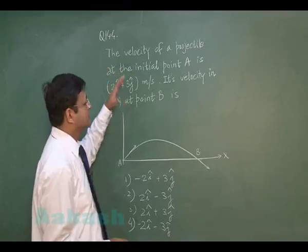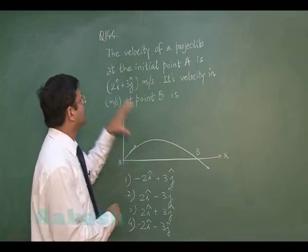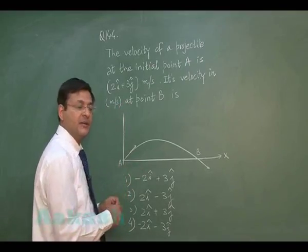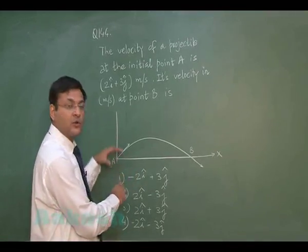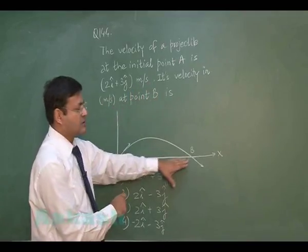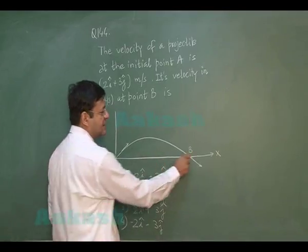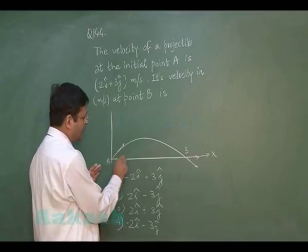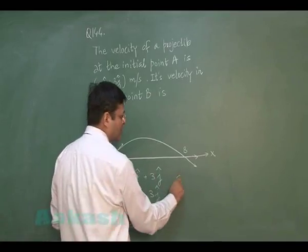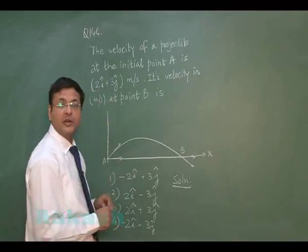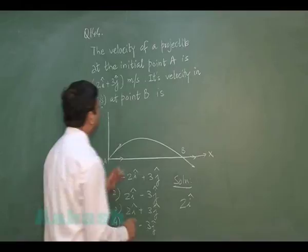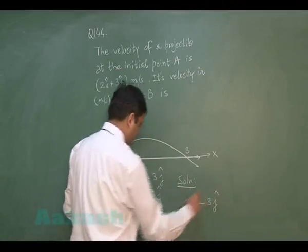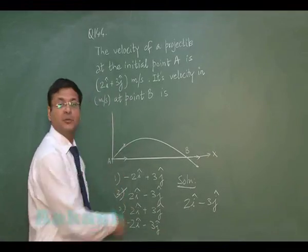Question 144 is based on projectile motion. The velocity of a projectile at initial point A is 2i + 3j m/s. We need to find the velocity at point B. In projectile motion, the x-component remains unchanged at 2i, but the y-component completely reverses its direction. So 3j becomes −3j at point B, giving velocity 2i − 3j. Option 2 is the most appropriate answer.